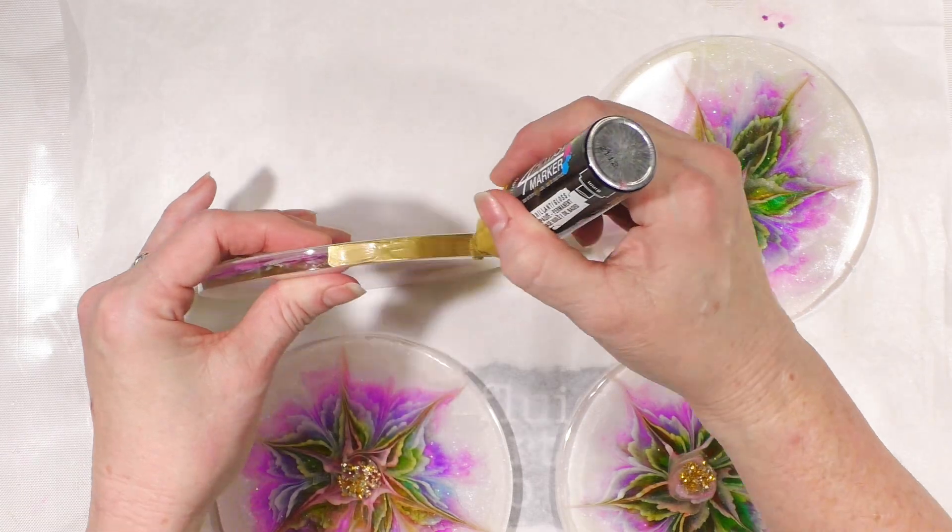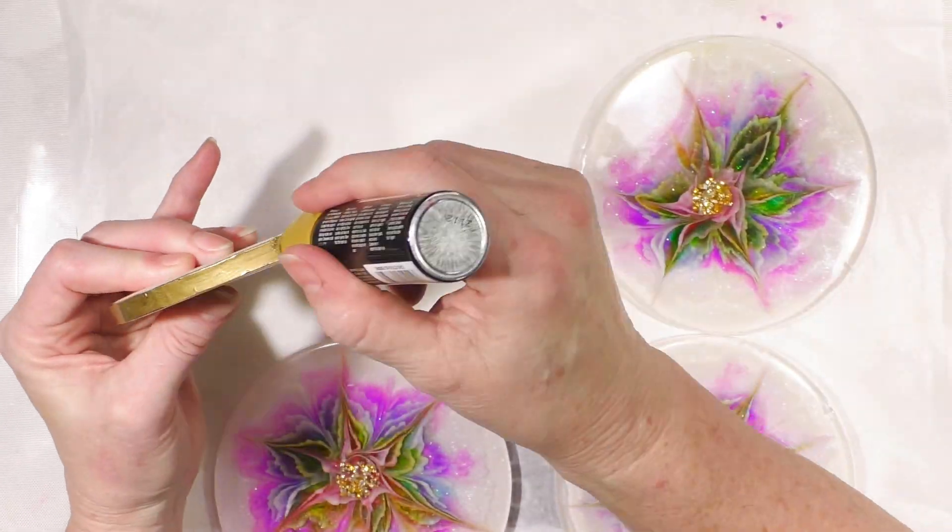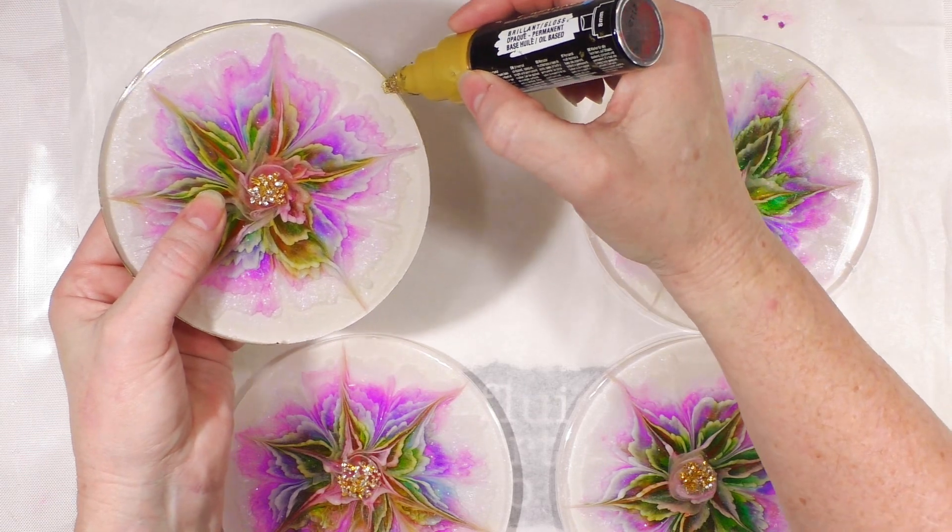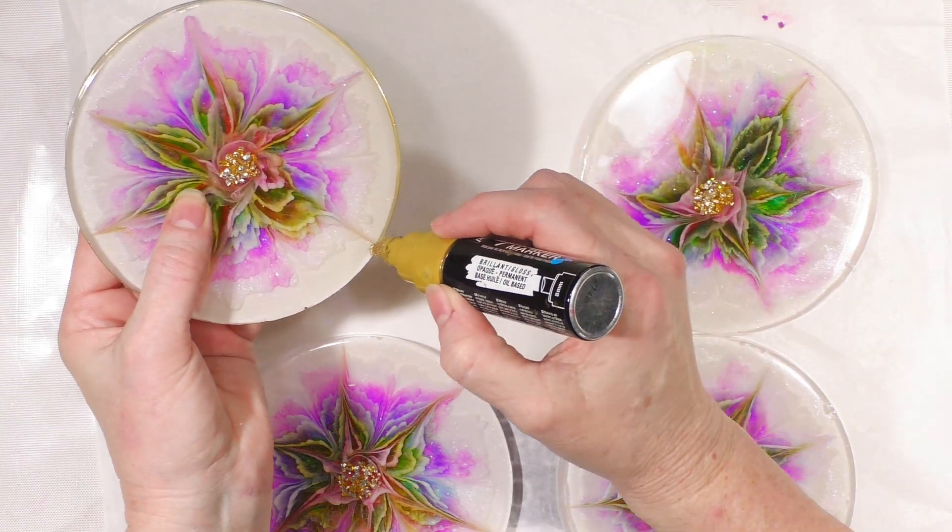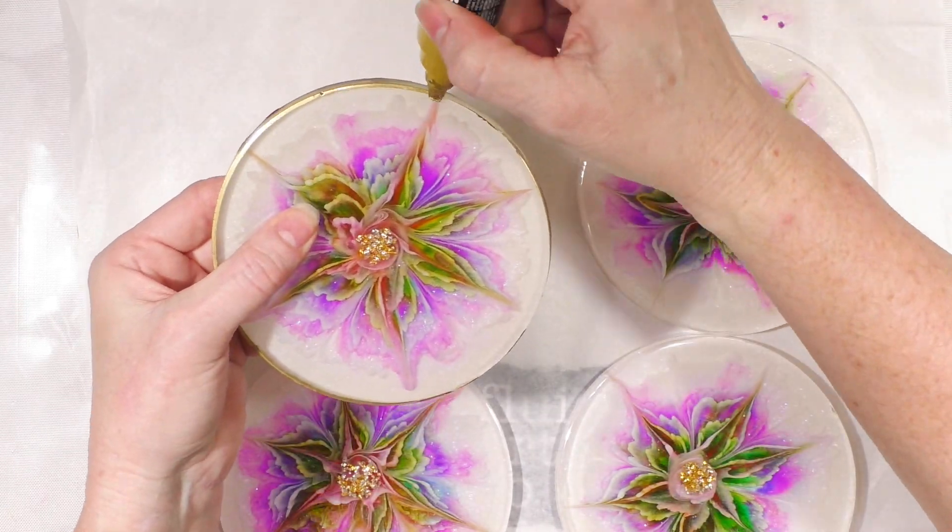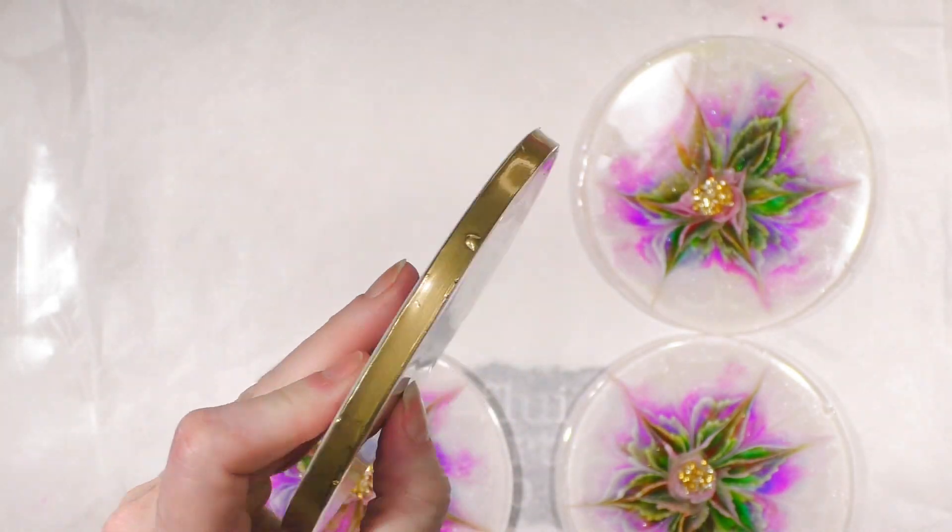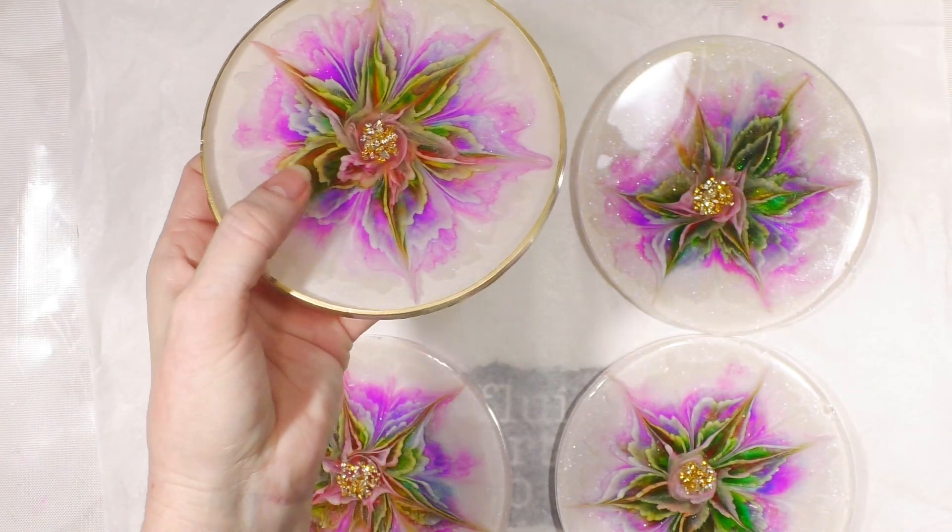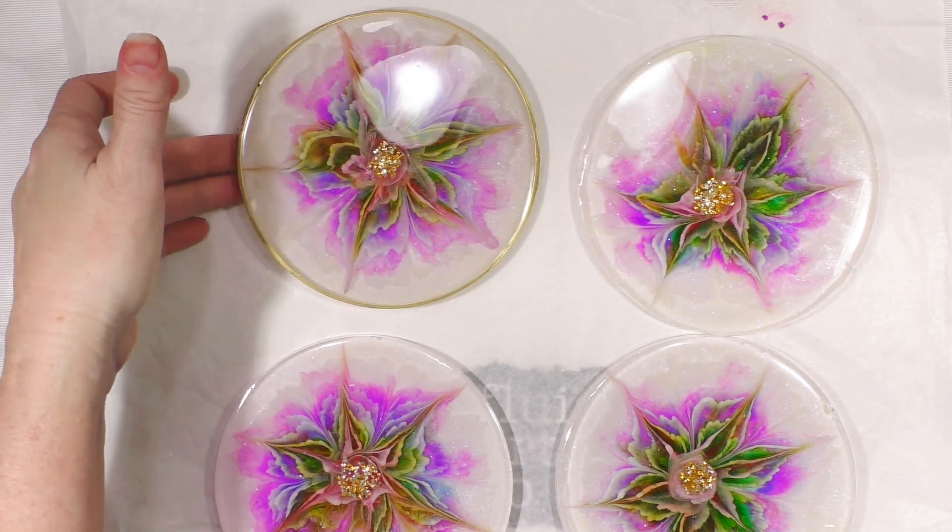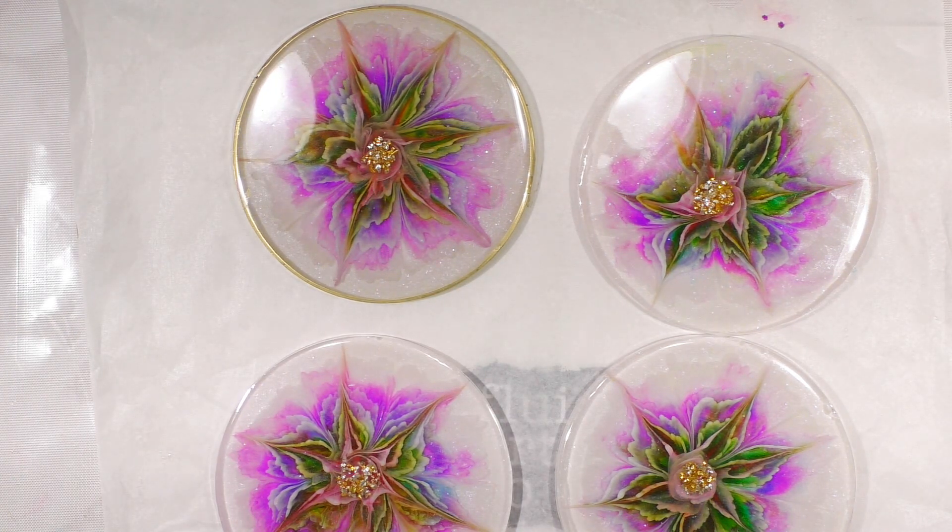I'm going to go around that top edge just a little bit on the inside. So you have a little bit of a gold rim and then gold edges. And I'm going to do that with all four. And I'll show them to you at the end outside in the sunshine.